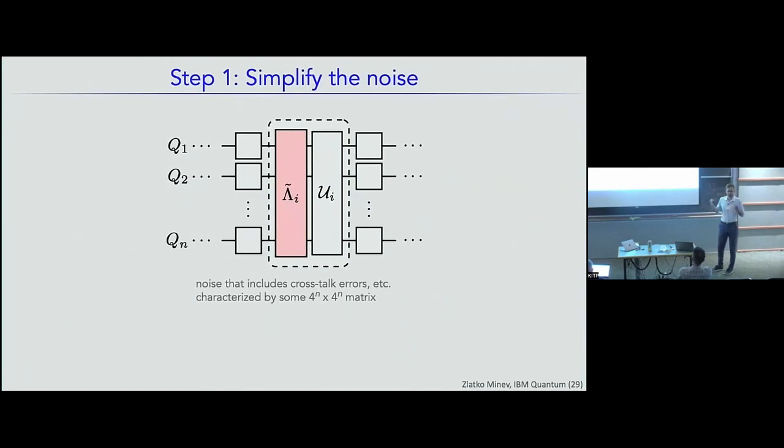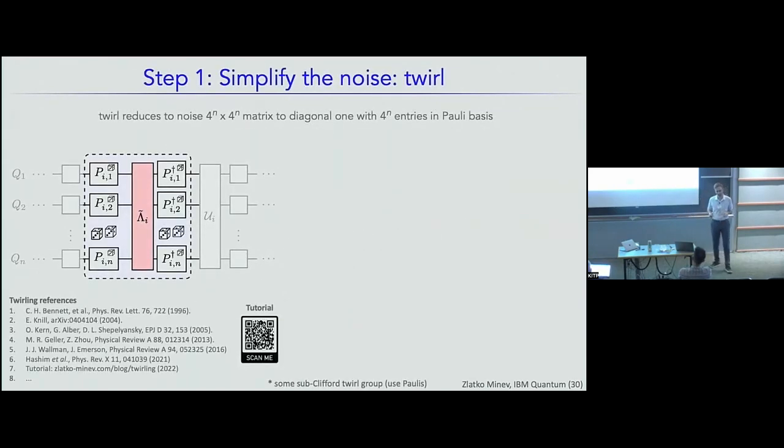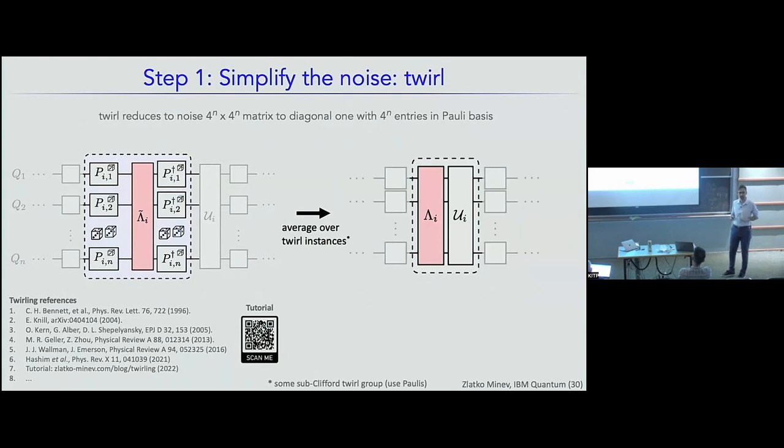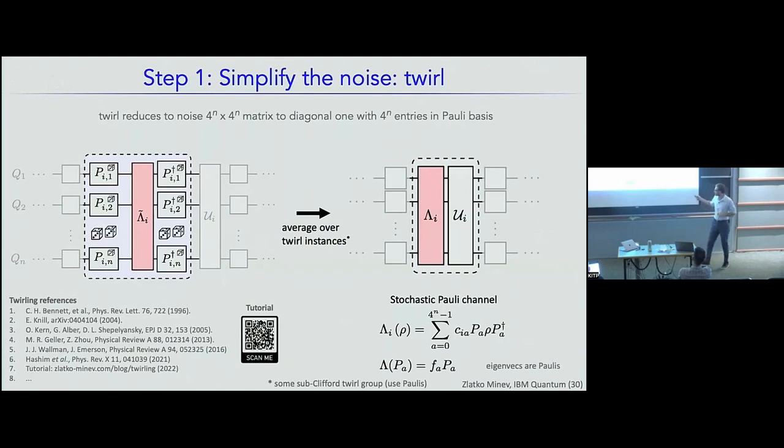So step one is to simplify the noise. I think also John started with this in his talk. You can begin by taking the noise that's a 4 to the n by 4 to the n matrix and using a technique known as twirling or randomized compiling. You can simplify that noise so that it only has 4 to the n number of parameters. If you're interested in a tutorial, you can scan this link. Essentially, you can guarantee that the noise in your quantum processor is a stochastic Pauli channel where P_A is a Pauli operator, c_A is some coefficient and there's 4 to the n of these. The special thing about stochastic Pauli channels is that their eigenvectors are Paulis and their eigenvalues are the Pauli fidelities.